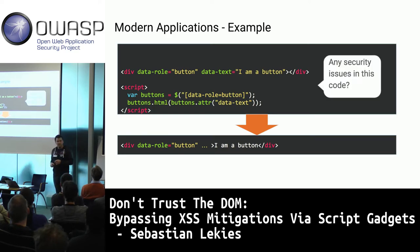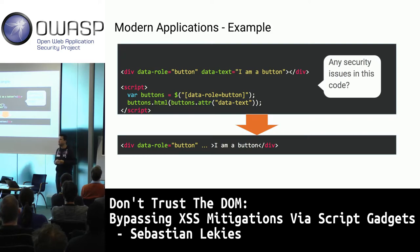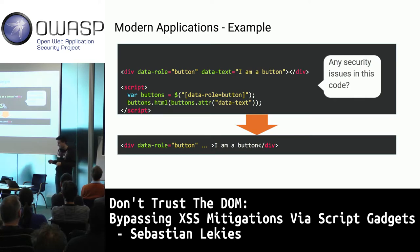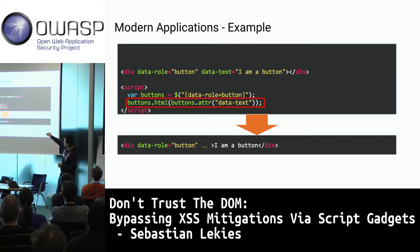Does anyone see a security problem in this code with XSS mitigations in mind? The security issue is here: we take a data attribute — which is by definition data — and turn it into HTML, into code.